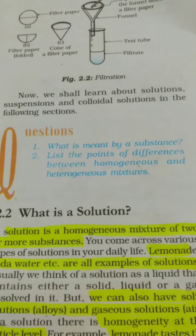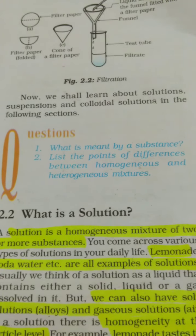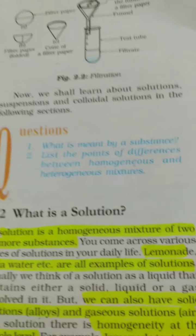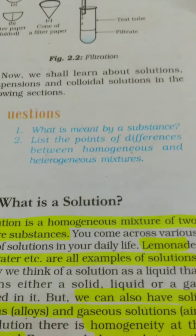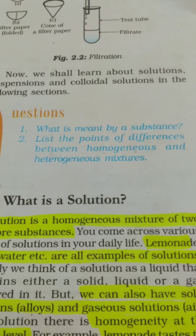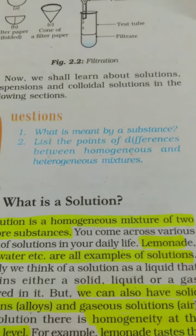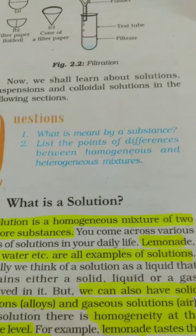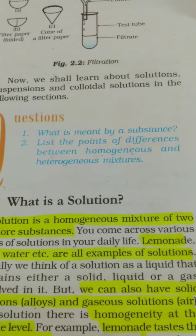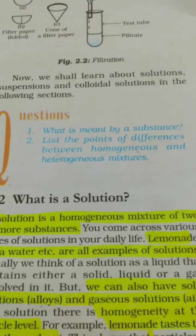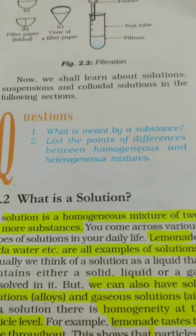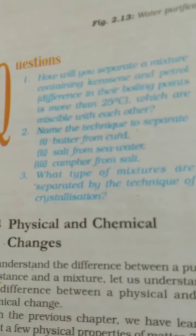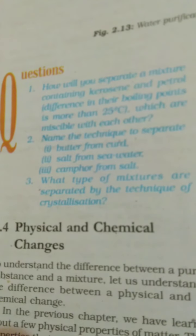Every substance has its own melting point and boiling point, and they are pure forms. Now the next question is to list the points of differences between homogeneous and heterogeneous mixtures. I don't think you need more points discussed here, because the checkpoints have already been discussed on how to differentiate homogeneous and heterogeneous mixtures.